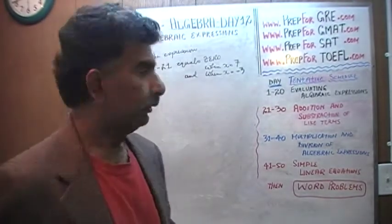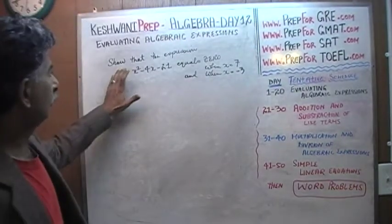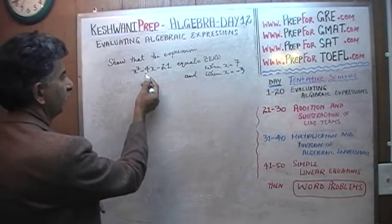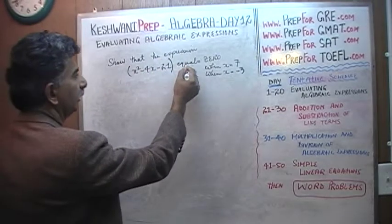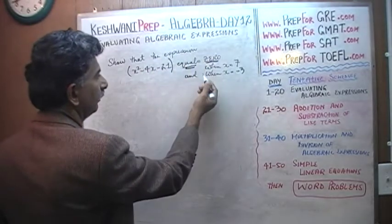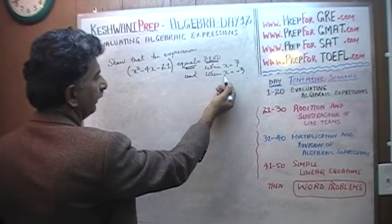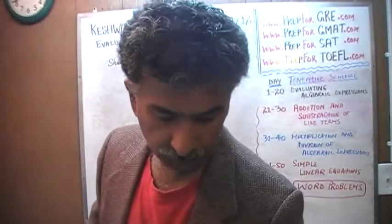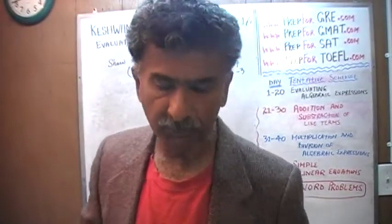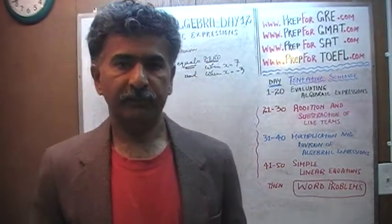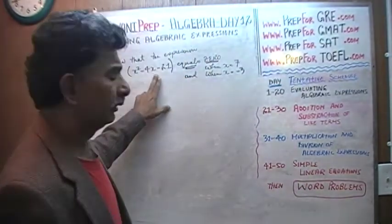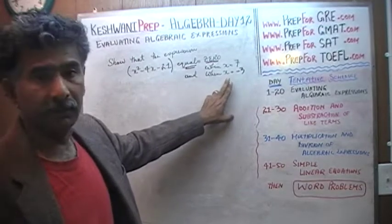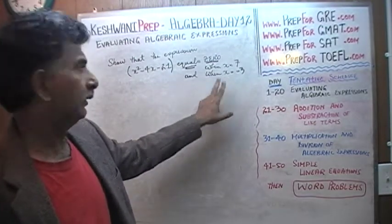The problem is already on the blackboard. It says: show that the expression x squared minus 4x minus 21 equals 0 when x equals 7 and when x equals negative 3. So we have to show this twice — first we have to show that this expression equals 0 when x assumes the value of 7.